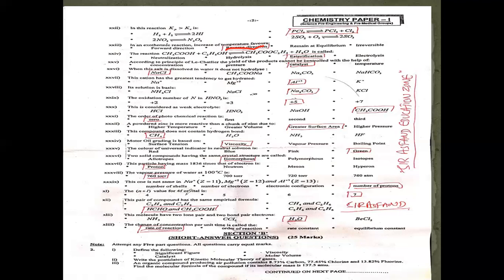The n + l value for the 4f orbital: n = 4, l = 3, so n + l = 7. This pair of compounds has the same empirical formula — C₂H₂ and C₆H₆ both have empirical formula CH. Water has two lone pairs and two bond pairs of electrons. The rate of reaction is the change of concentration per unit time, either decrease of reactants or increase of products.